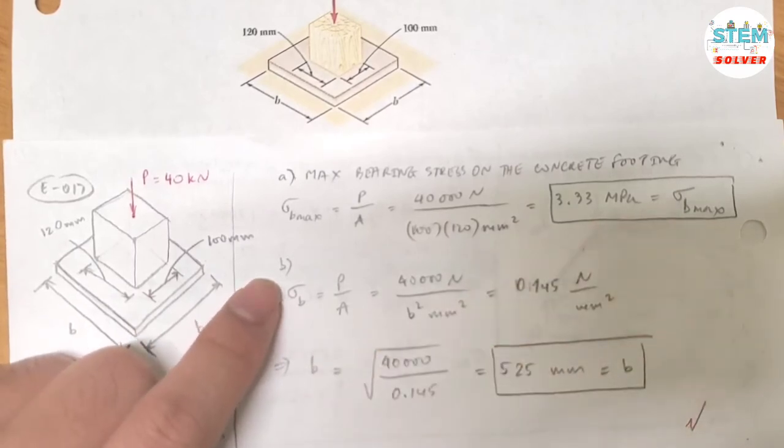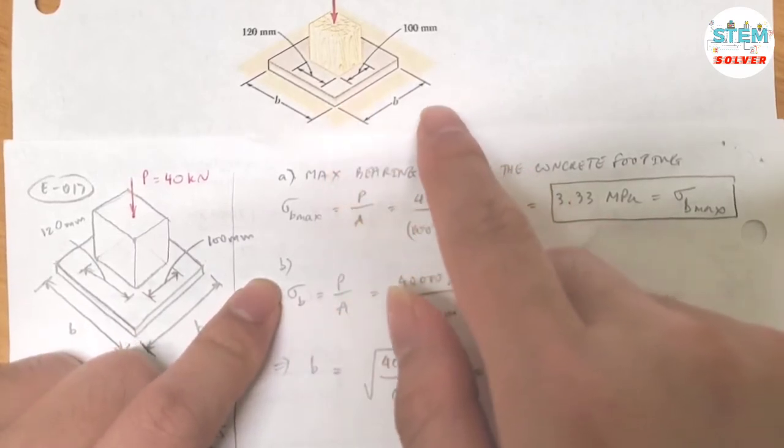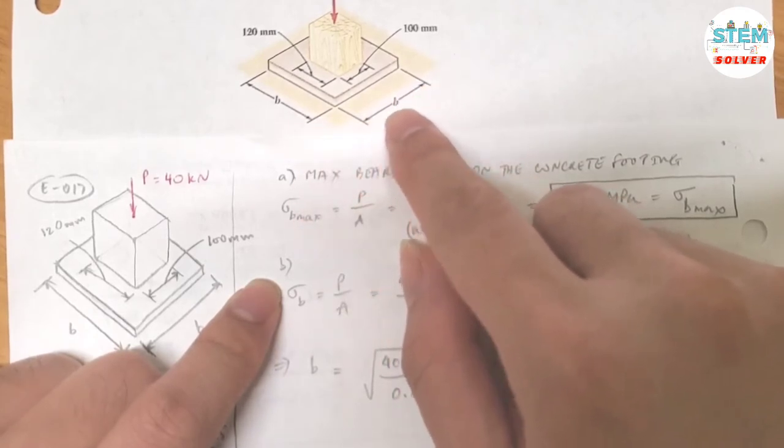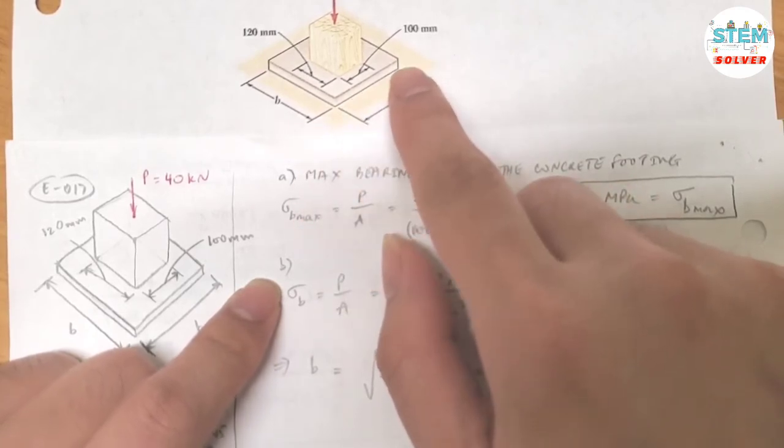So this problem is kinda easy. For part B, you're asked to find the dimension of the concrete footing.